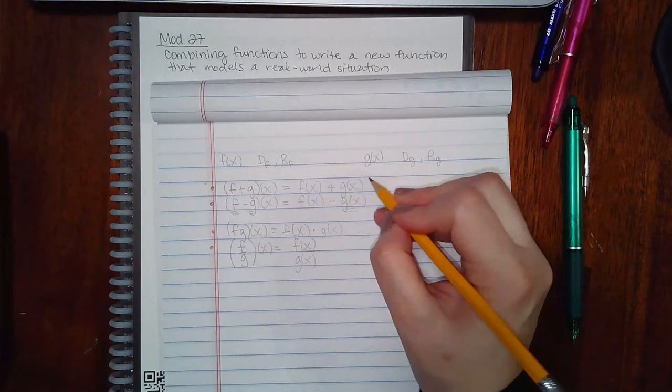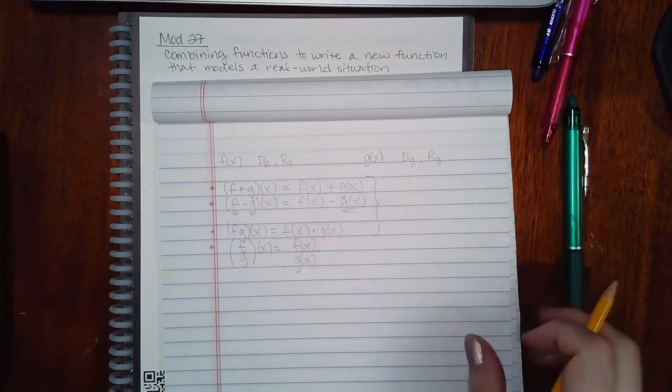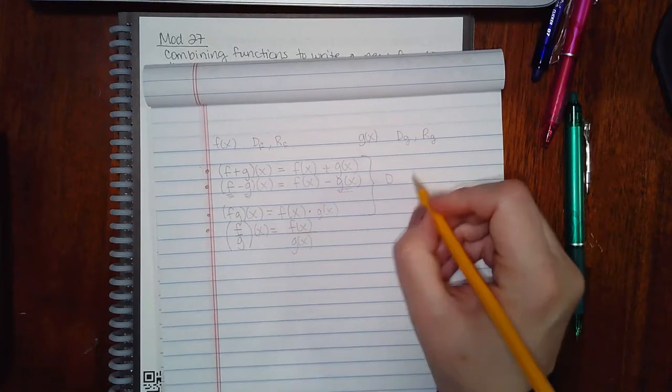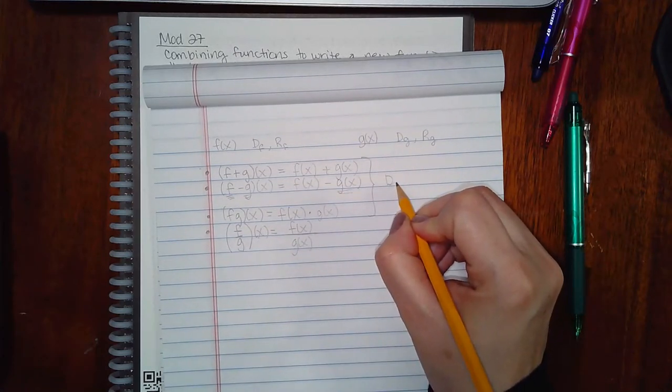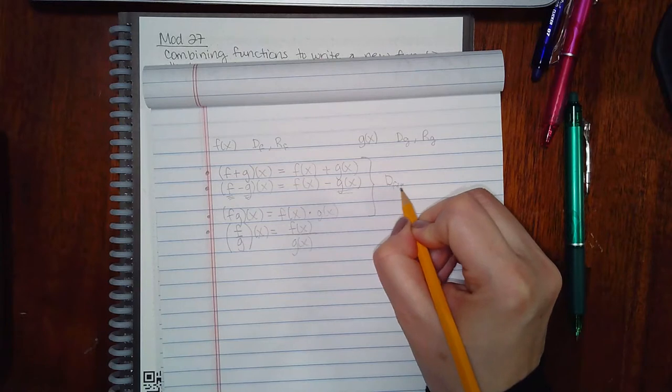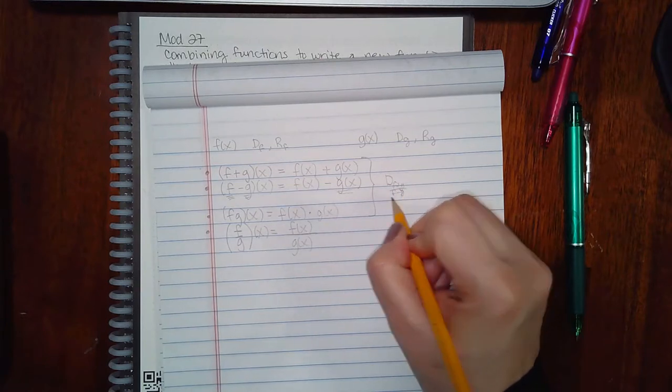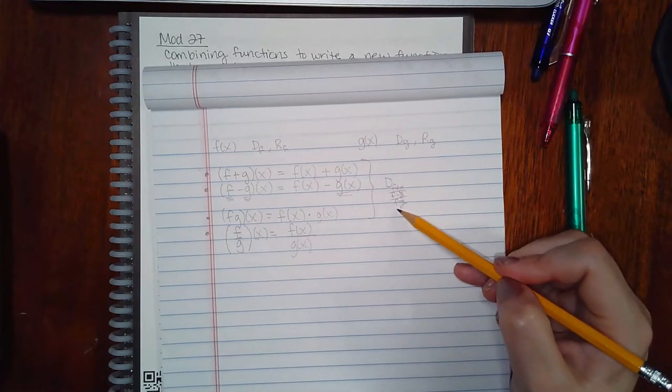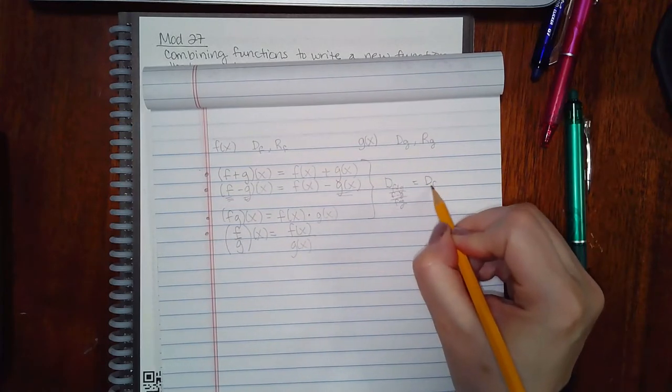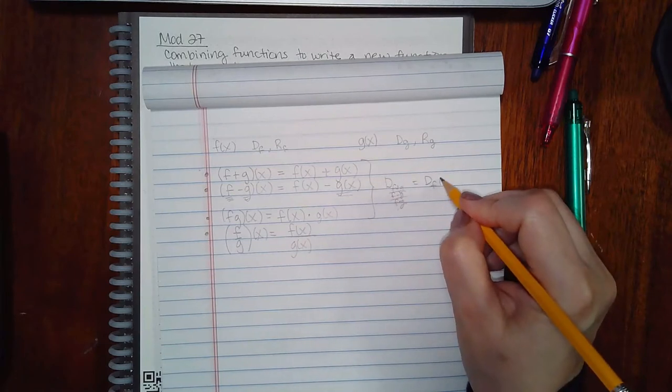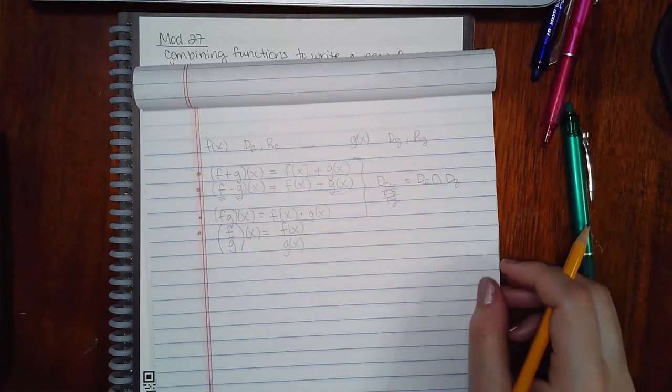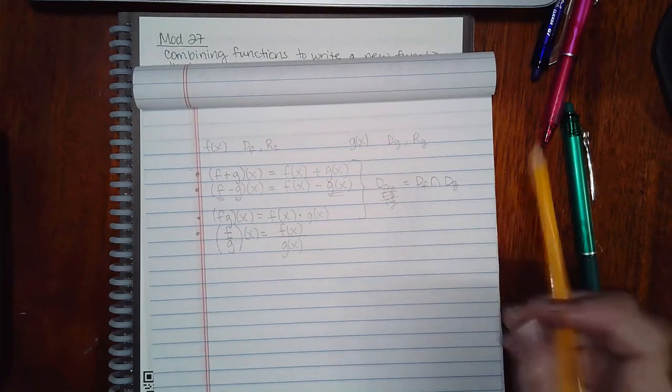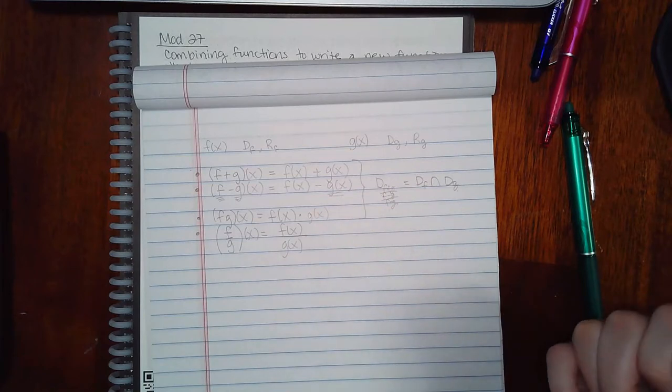Now for these three kinds of combining, when you want the domain of, regardless what it is, whether it's f plus g or f minus g or f times g, if you're finding the domain of any one of these, it's just going to be the domain of f intersect with the domain of g. So you find both domains, find where the two domains overlap, and that'll be the domain of each of these three combinations.